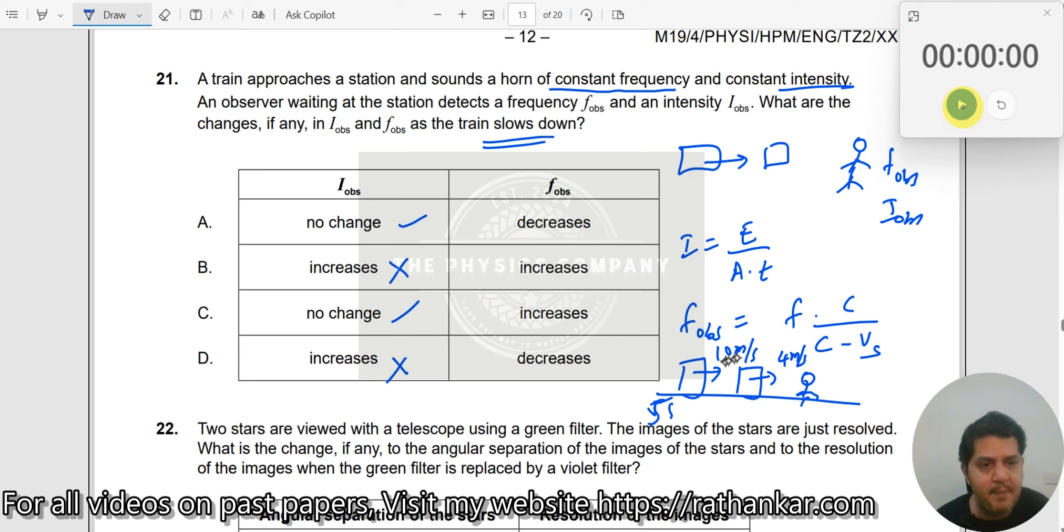Now, you see the velocity is reducing. So, at this point, at 10 meter per second, you would have got some observed frequency. So, you would have got F observed is equal to F C divided by C minus 10. You would have got here.